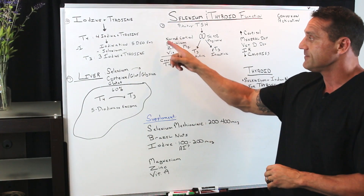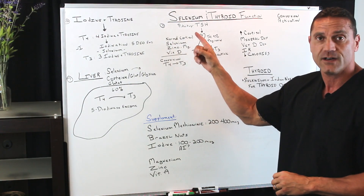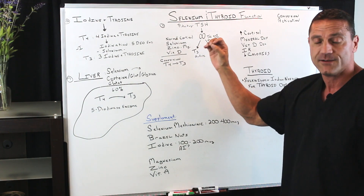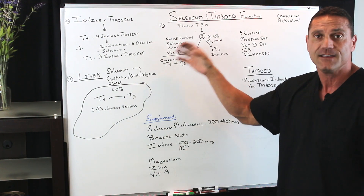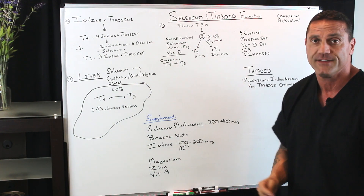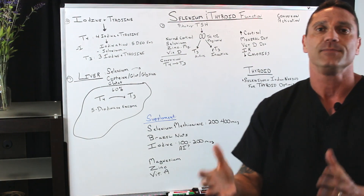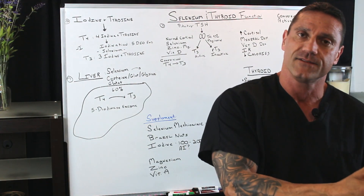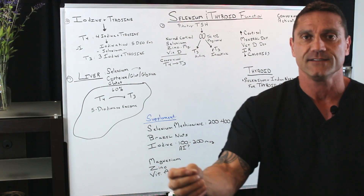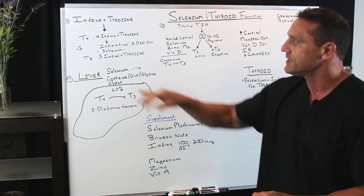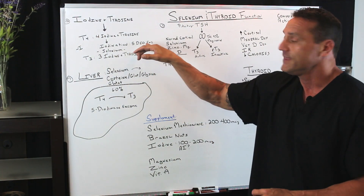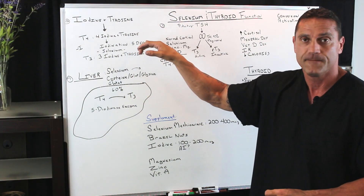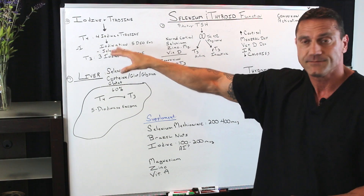The flip side: if you have normal cortisol and adequate amounts of selenium, zinc, magnesium, and vitamin D, it's going to help boost the conversion of inactive T4 to T3. Why? Because it's going to fuel that 5-deiodinase enzyme, which needs selenium.